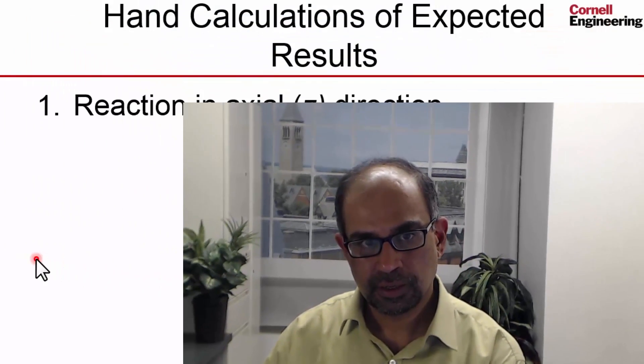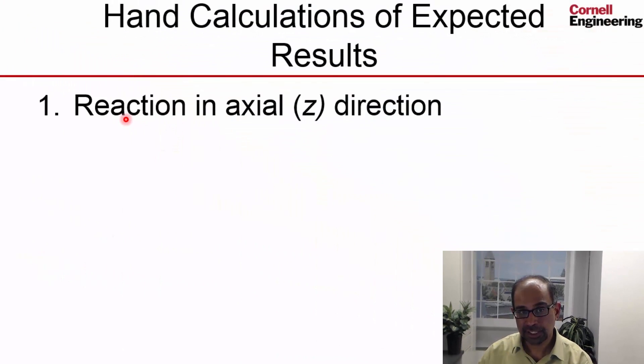Let's take a look at what kind of hand calculations one can do of the expected results. We can estimate the reaction in the axial direction with which the nozzle will be pushing on the frictionless support.